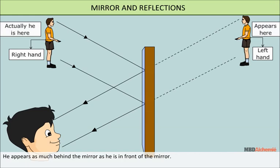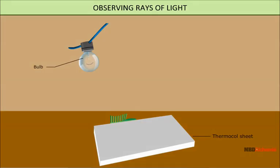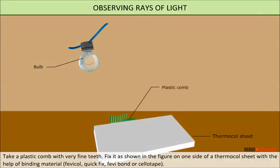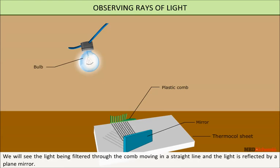He appears as much behind the mirror as he is in front of the mirror. His nose, eyes, mouth, and height appear as they actually are. The colors of his face, clothes, etc. are the same in the image as in reality. To observe rays of light, take a plastic comb with very fine teeth. Fix it on one side of a thermocol sheet with the help of a binding material such as Fevicol, Quick Fix, or cello tape, as shown in the figure. Fix a mirror by pressing it onto the thermocol sheet in an inclined position as shown in the figure. You will see the light being filtered through the comb moving in a straight line, and the light is reflected by the plain mirror.